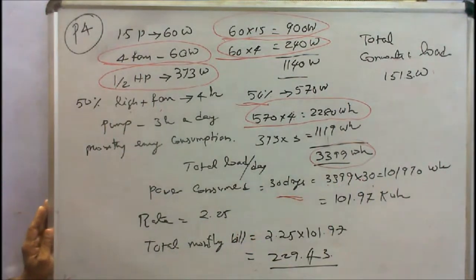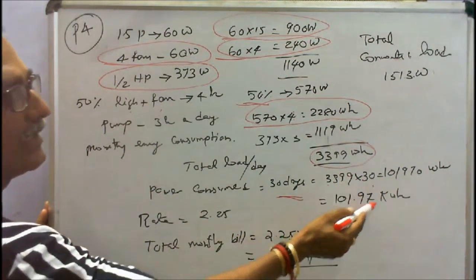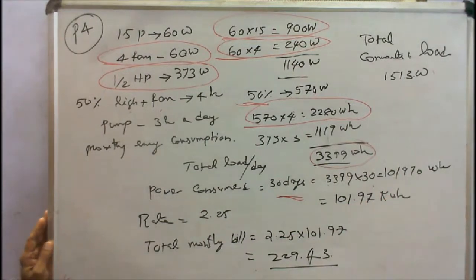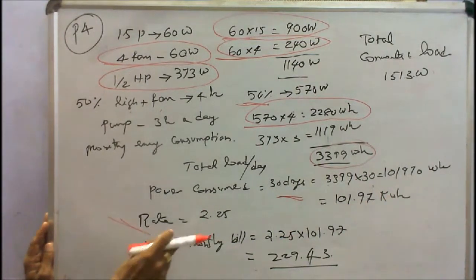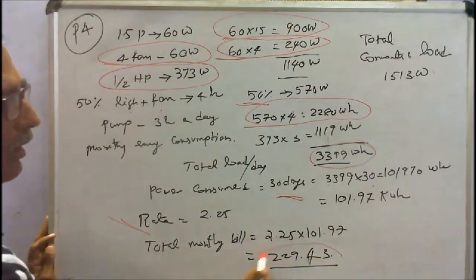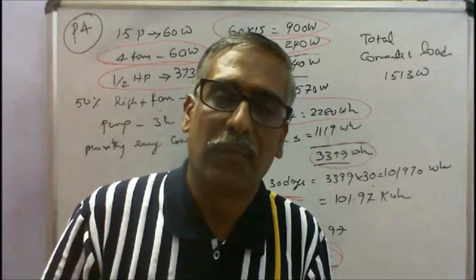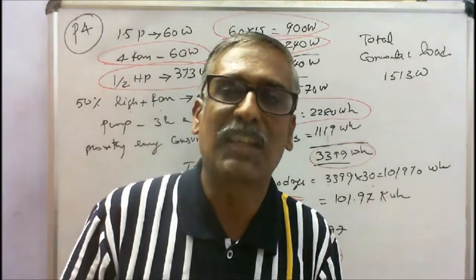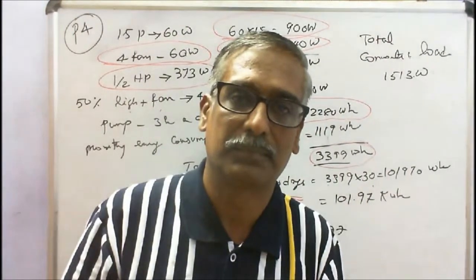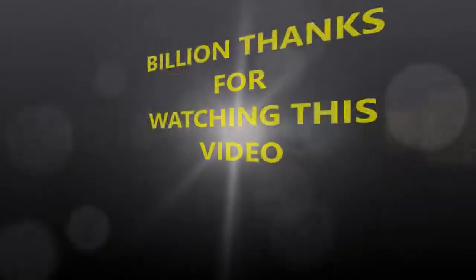The rate tariff is Rs. 2.25 per unit. The monthly bill is 229 rupees 43 paise. With this I conclude my lecture. Thanks for listening.